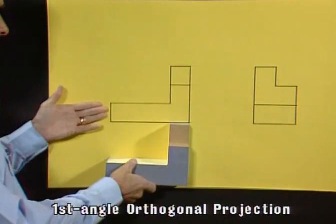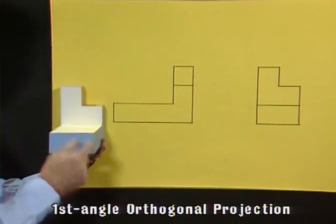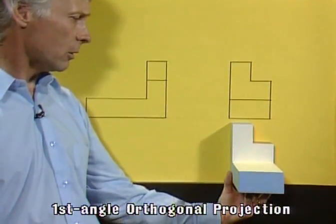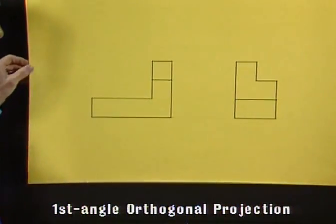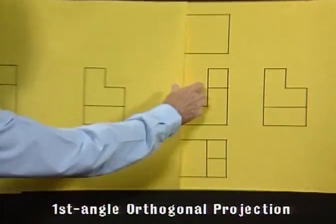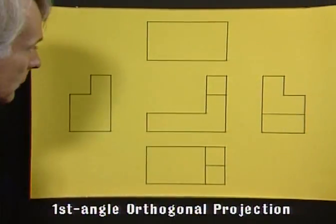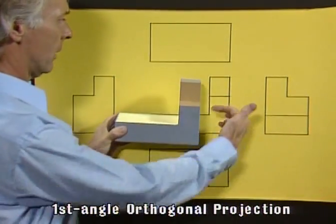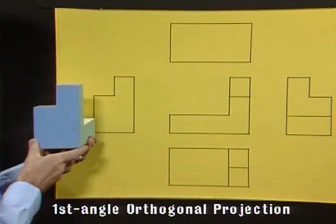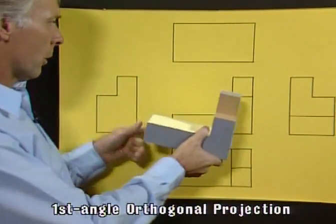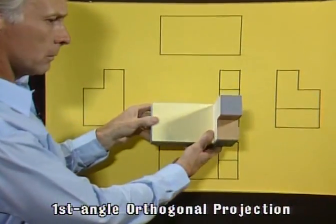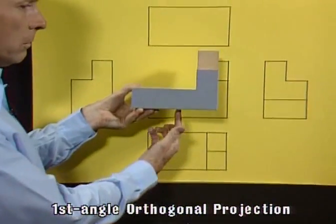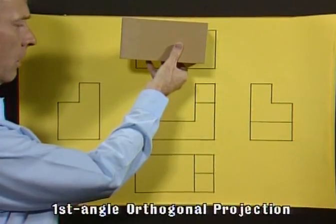A view from the left-hand side, which we're showing here, is actually projected right over onto the right-hand side in first angle projection. It's the same with all the other views. A view from the right-hand side is projected over onto the left. A view from the top is shown below the front elevation, and a view from the bottom is shown above the front elevation.